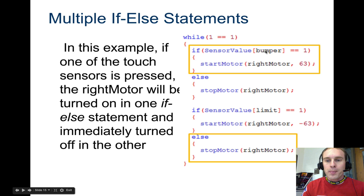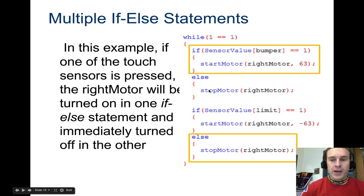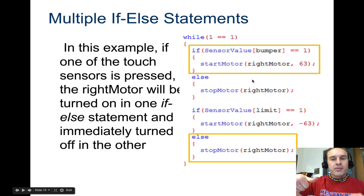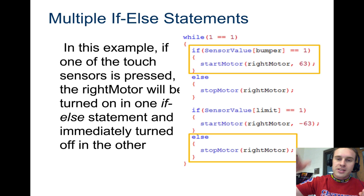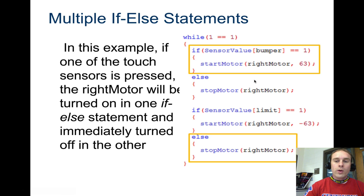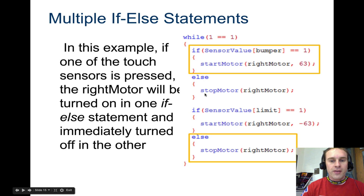The first condition: if the sensor value bumper — the bump switch — is pushed in (that's a one), then we start the motor. If it's not, we push the bump switch in and the motor starts. Then it comes down to the next if-else: if the limit switch is pushed in, it reverses the motor. But if the limit switch is not pushed in, it stops the right motor. So if you have the bumper pushed in, the right motor turns on. But if the limit switch is not pushed in, it also tries to stop the motor at the same time — so the motor will be trying to turn on and off repeatedly. Or if both switches are pushed in, you'd have right motor forward and right motor reverse simultaneously. This is an example of conflicting if-else statements.